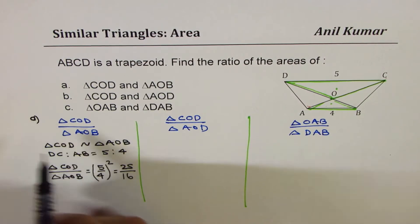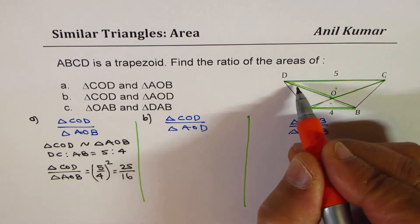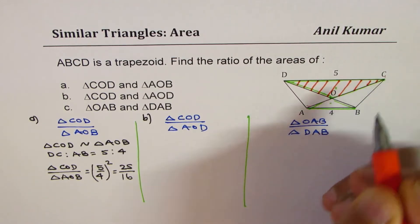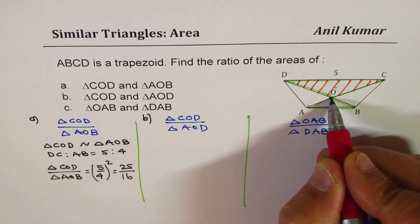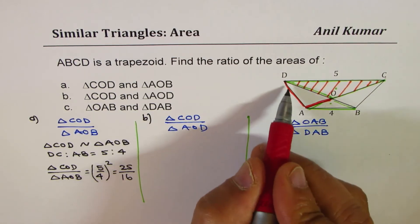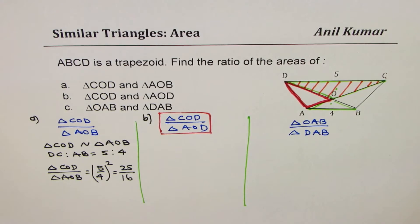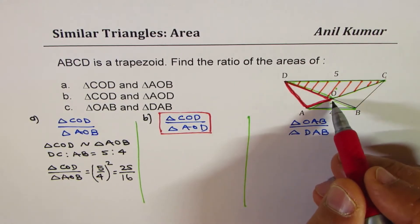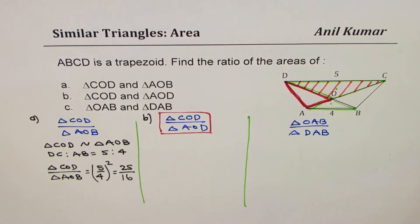Now let's take Case B, comparing triangle COD with triangle AOD. If we drop an altitude, that perpendicular height is going to be common to both triangles. We can take the sides in the ratio of 5 to 4, and the perpendicular height will also be in a related ratio.